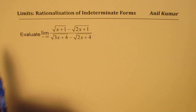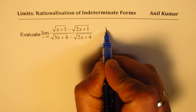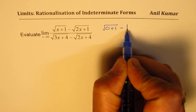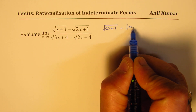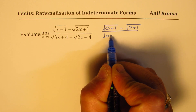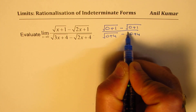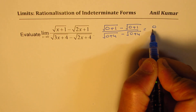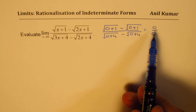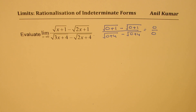Now in this particular question, if I substitute 0 for x, what do I get? Let's check that. We get square root of (0 plus 1) minus square root of (0 plus 1) over square root of (0 plus 4) minus square root of (0 plus 4). So we get a form which is 0 over 0. Now that is indeterminate.